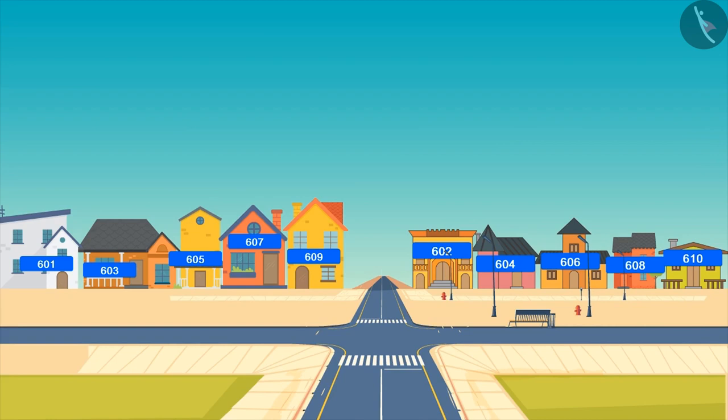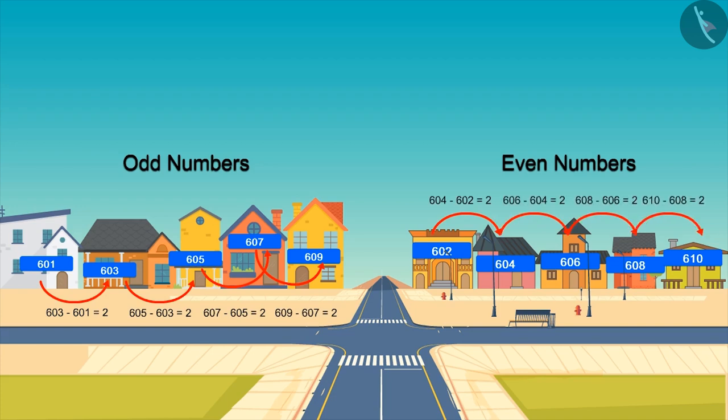Yes, the numbers in the houses on the left side are all odd numbers and the numbers on the houses on the right side are all even numbers. There is a difference of two between even and odd numbers, and there is a difference of two between the numbers of these houses too. If we look at odd numbers, 603 minus 601 equals 2. Similarly, in even numbers, 604 minus 602 equals 2. So you saw how we can see different patterns in numbers.